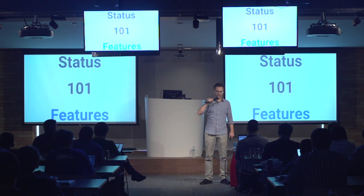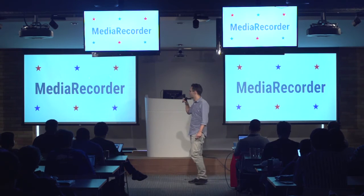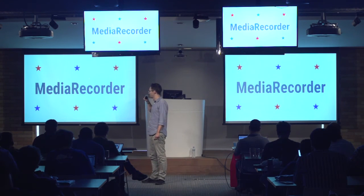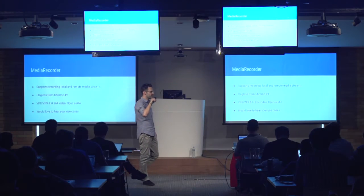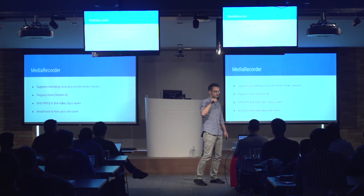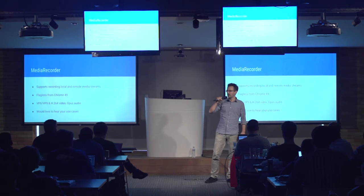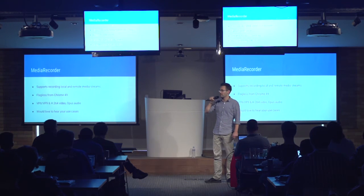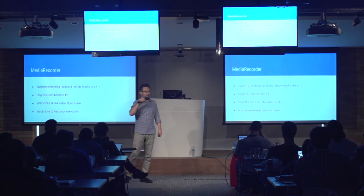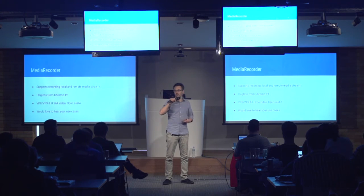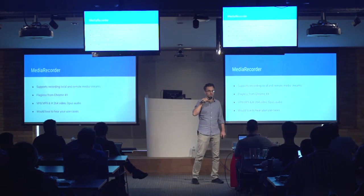One of the most starred features in WebRTC this year was Media Recorder — over 2,500 stars, the highest starred bug in the Chromium bug tracker. It supports recording of local and remote media streams; you can capture your screen or any incoming stream. You can capture in VP9, VP8, or H.264, with the default audio codec set to Opus. We see this API being picked up and would love to hear what use cases developers are working on to record media.